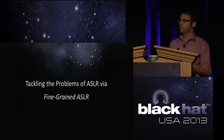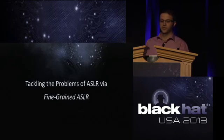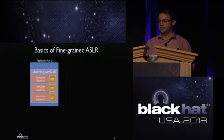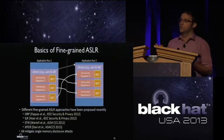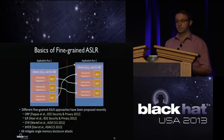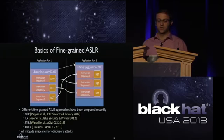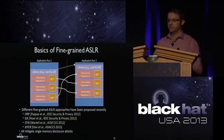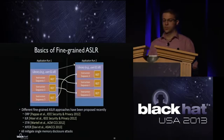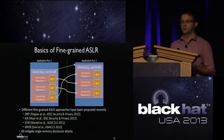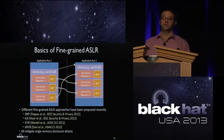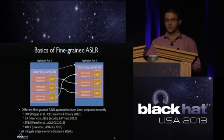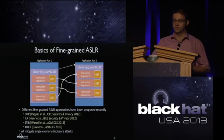To tackle ASLR's weakness to single pointer leaks, researchers proposed fine-grained ASLR. The idea: randomize not only the base address of a library, but also its internal structure. For instance, instruction sequence one is moved from the top to the middle. We'll now look at each of these proposals in detail.